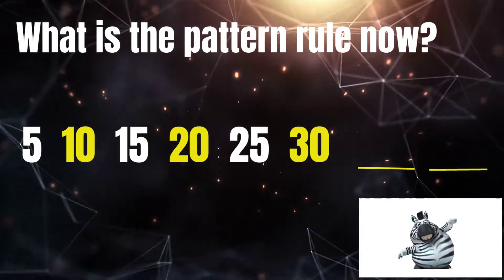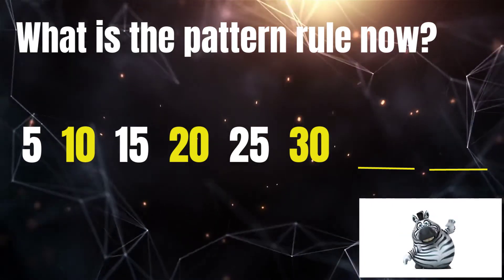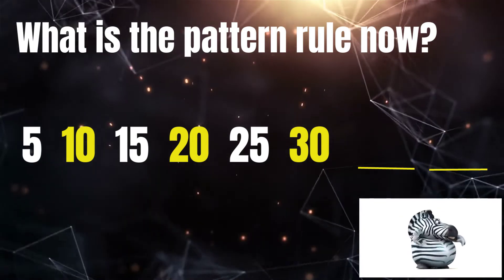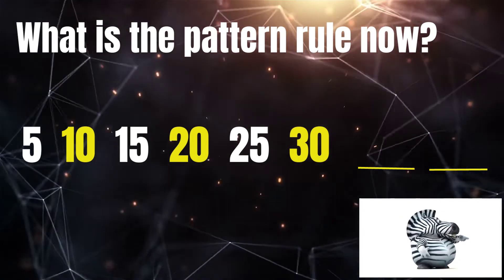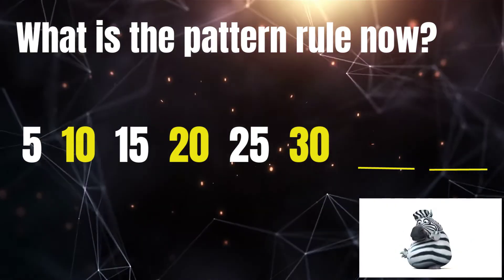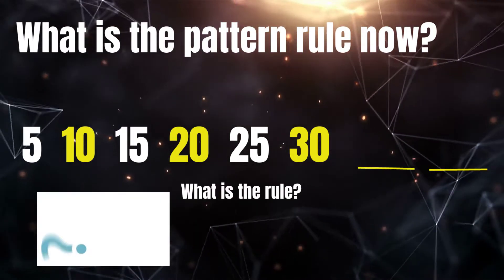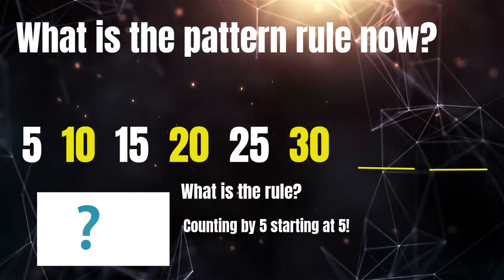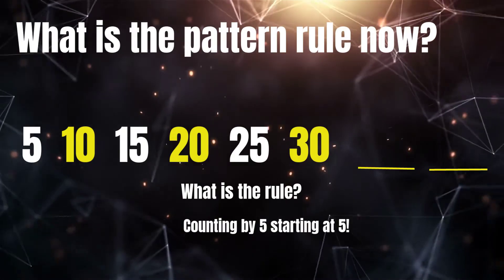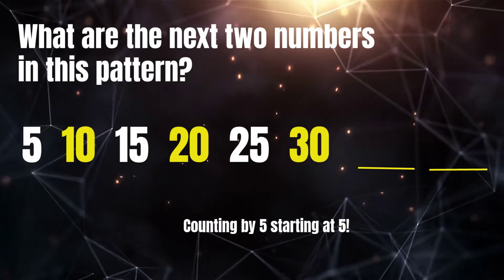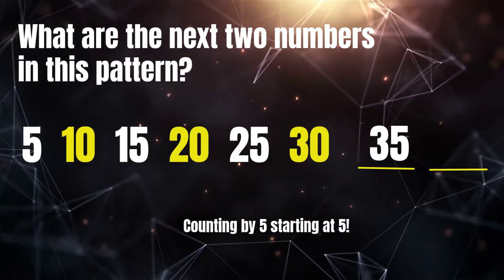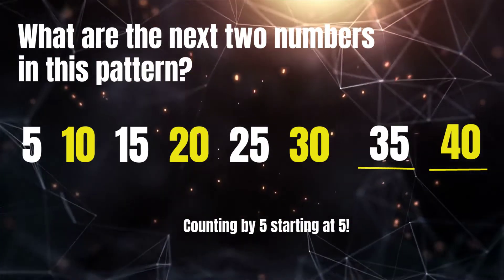What is the pattern rule now? Count with me. Five, ten, fifteen, twenty, twenty-five, thirty. What's the pattern rule? Counting by five, starting at five. Great work! What are the next two numbers in this pattern? Thirty-five, forty. Excellent!